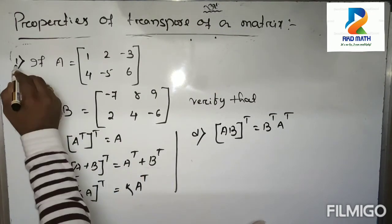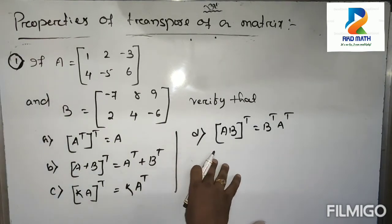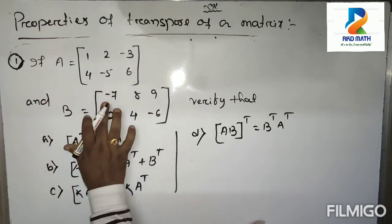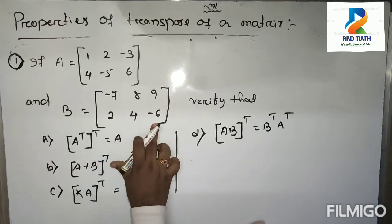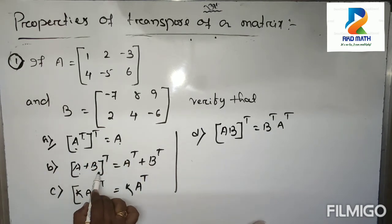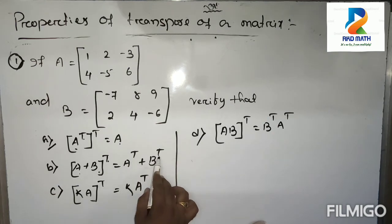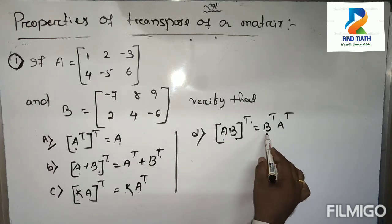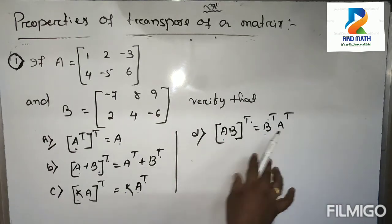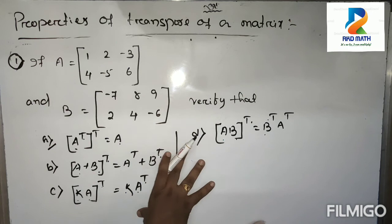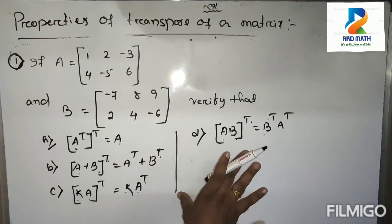Now students, let's take one question. Pause the video to write it down. Given A equals [1, 2, 1; 2, -3, 4; -5, 6] and B equals [-7, 8, 9; 2, 4, -6], verify all four properties: (1) A transpose whole transpose equals A, (2) A plus B whole transpose equals A transpose plus B transpose, (3) K times A whole transpose equals K times A transpose, and (4) AB whole transpose equals B transpose times A transpose. If any property is not satisfied, write it down as not satisfied.